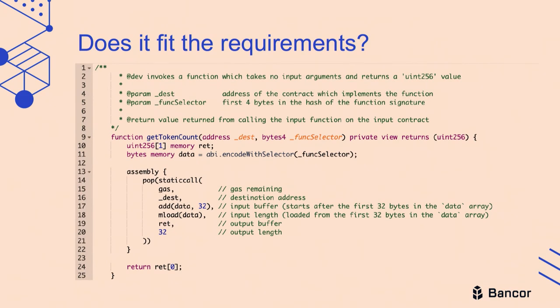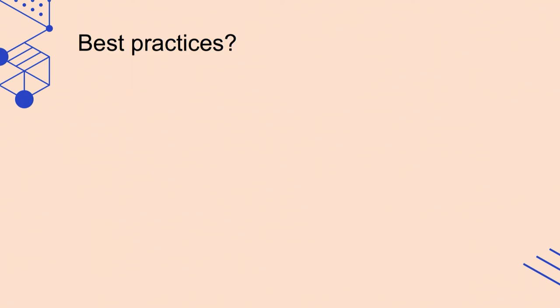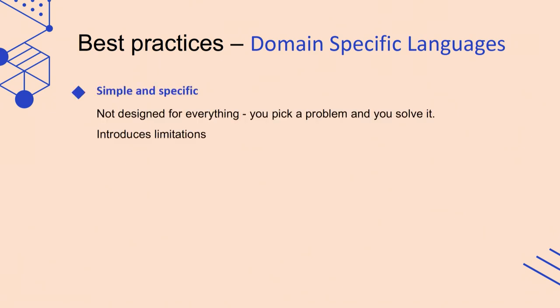This is a really huge problem. What can we do with it? Does this code fit our requirements for DeFi? This is Bancor, and again there is assembly code with comments to describe what's going on here. This is a very badly designed system. What are the best practices? What does the industry say about DeFi finance when we want to be perfectly sure that it's secure? The software development industry says that domain-specific languages are a solution for this kind of products and requirements. Why? Because they're usually simple and specific. They're not designed for everything—you pick a problem and you solve it. It introduces some limitations, yes, but that's the point.